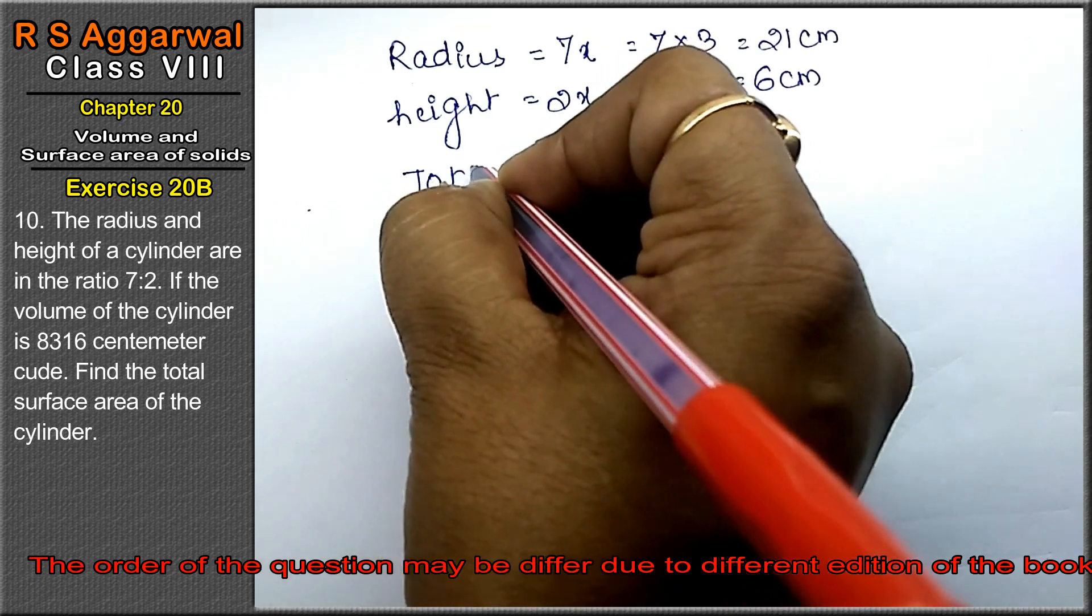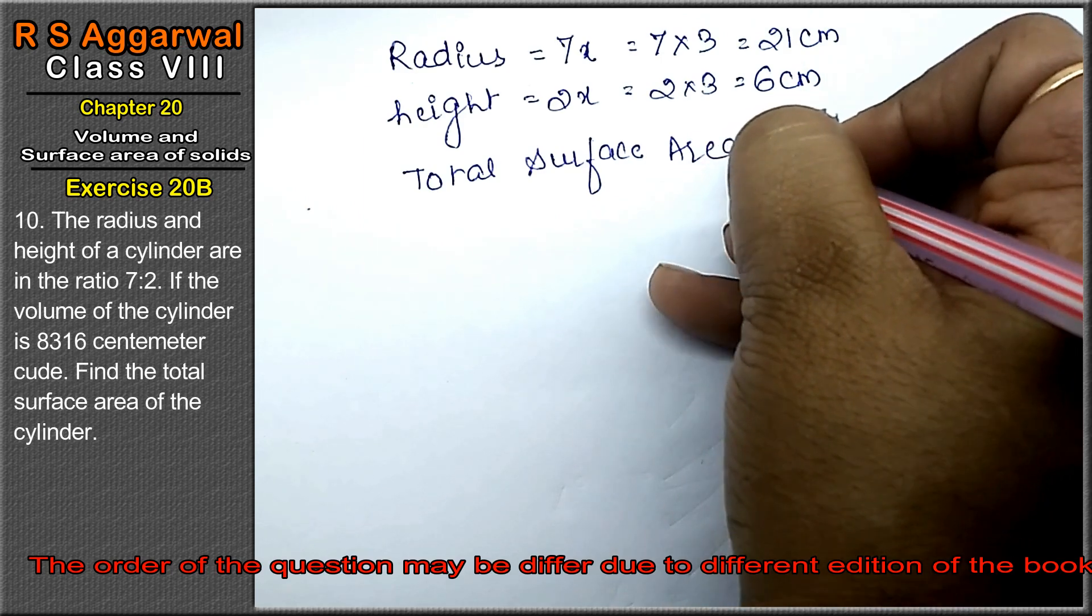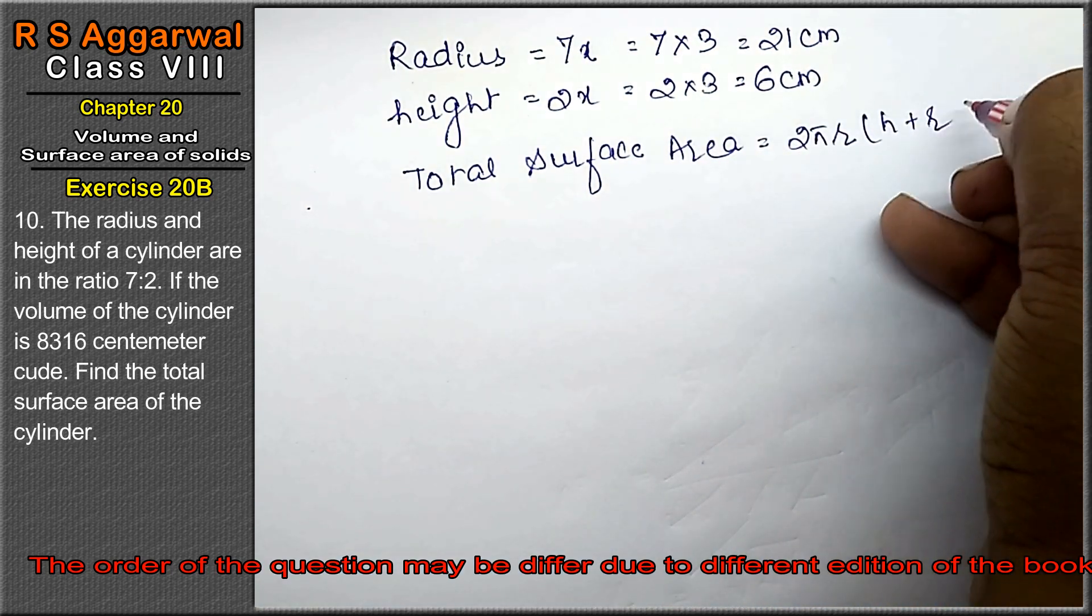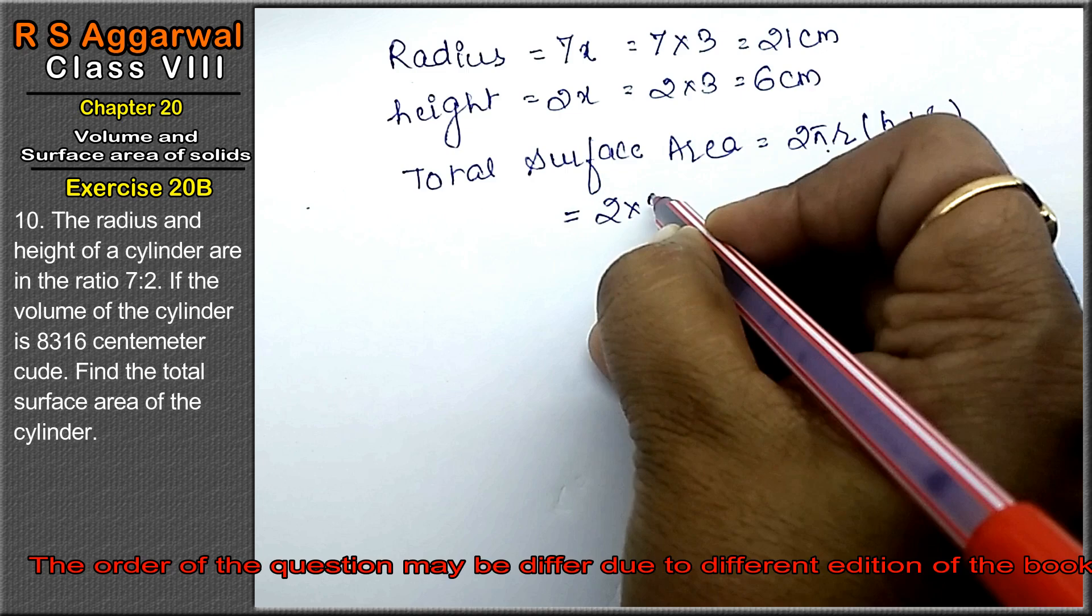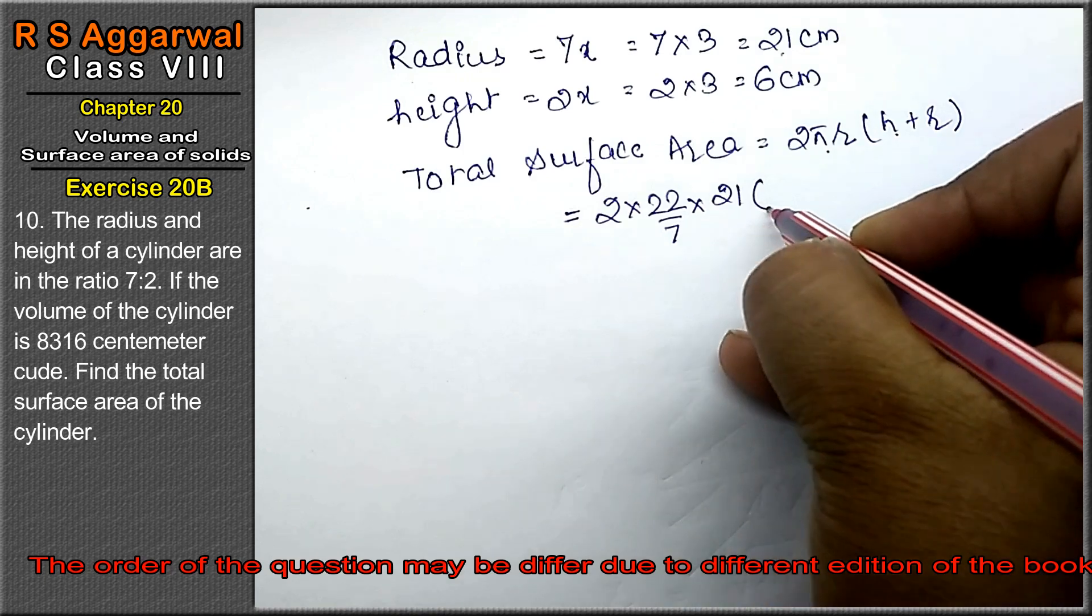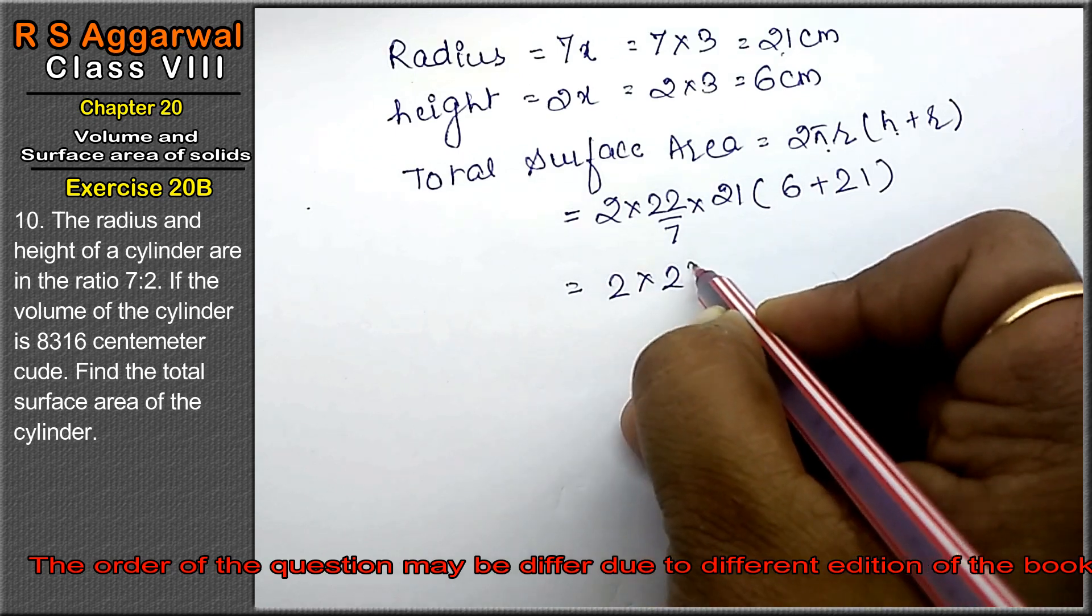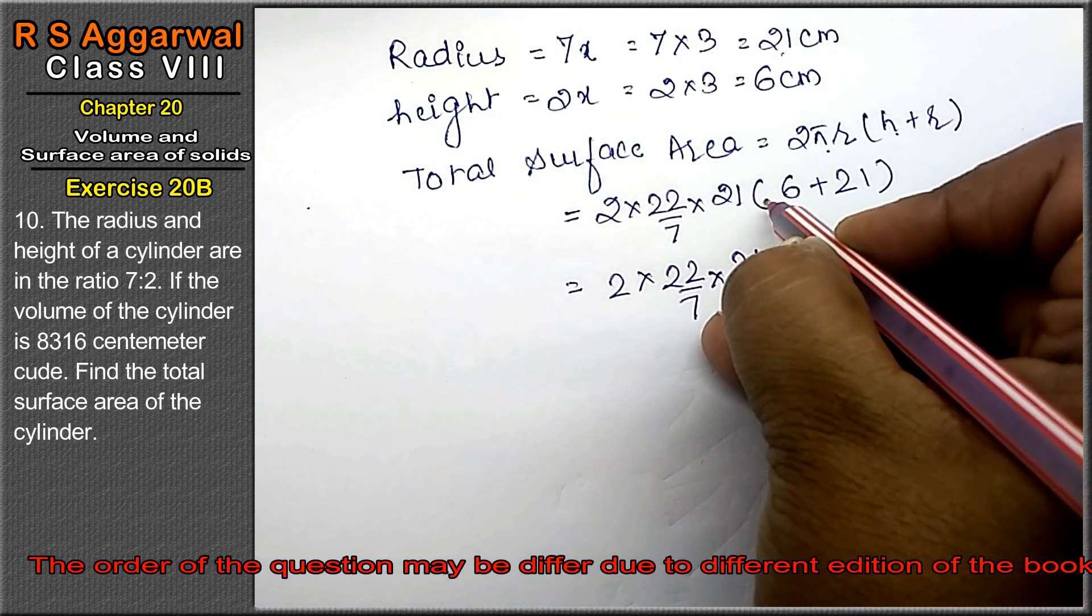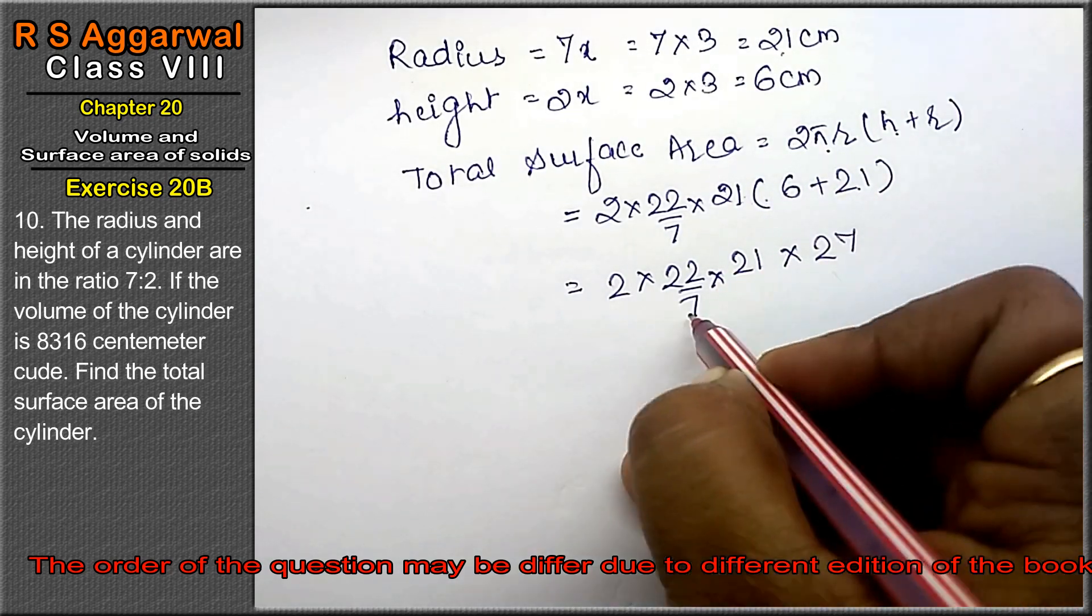Now we have to find total surface area. Total surface area formula is 2πr(h + r). We can use any formula or open the bracket however we want. 2 into π value 22 upon 7, r is 21, h is 6 plus 21.